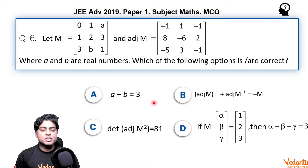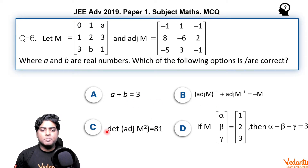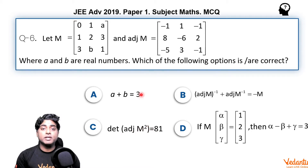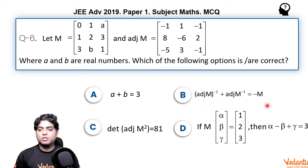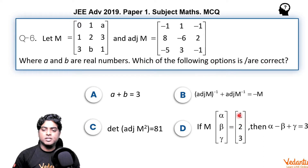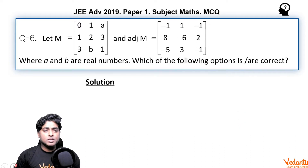It is very clear that we need to find A and B first. We also need to find the determinant of adjoint of M squared, so we need the determinant of M as well, along with a few basic properties of matrix operations. Let's see how we can solve it in an easy manner.